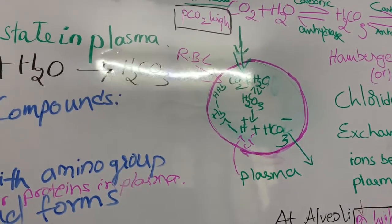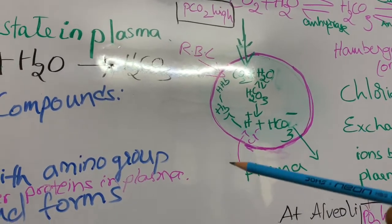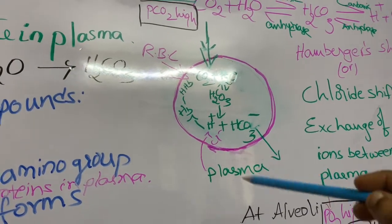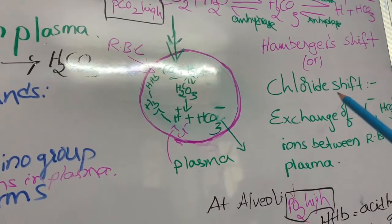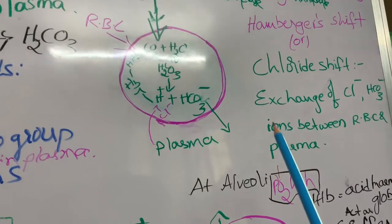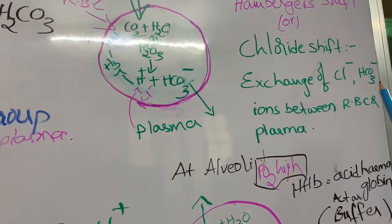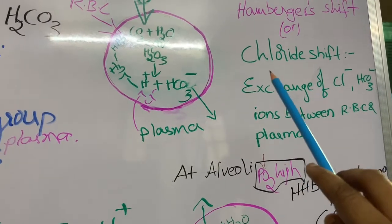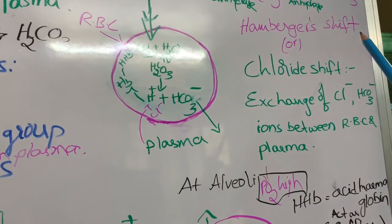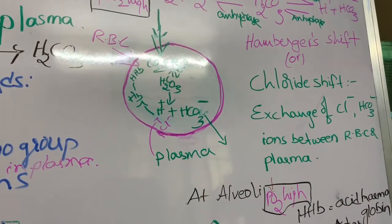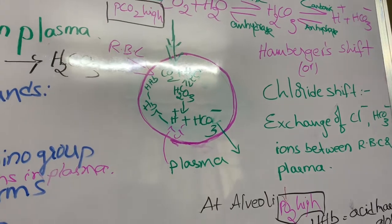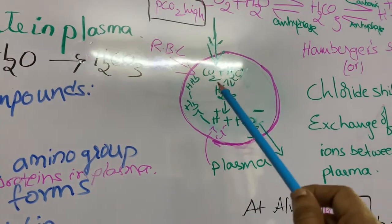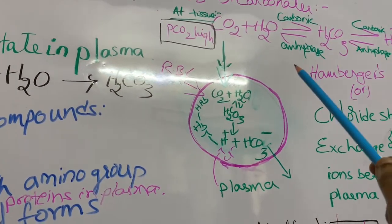To compensate the electrical balance, as one anion (bicarbonate) moves out of the RBC, another anion must enter — that anion is the chloride ion. This process is known as chloride shift, or Hamburger's shift, or Hamburger's phenomenon. This is very important from an examination point of view.